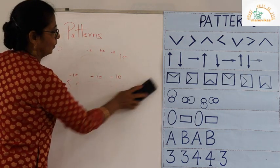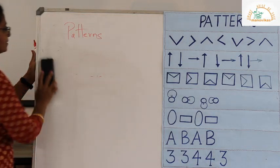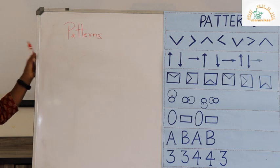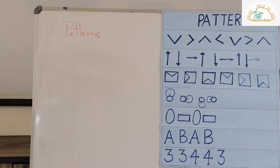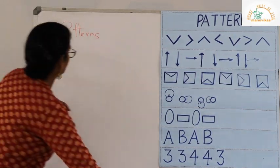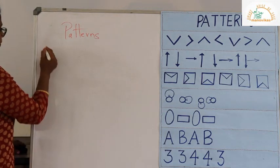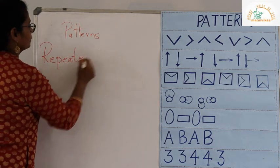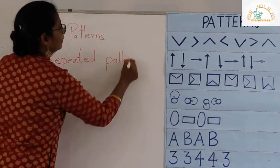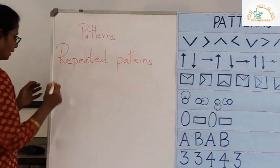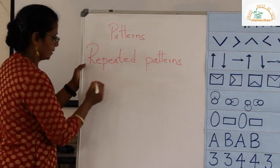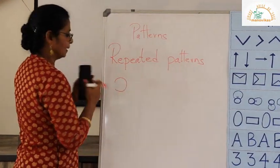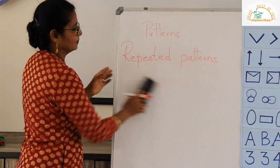Events in nature also grow. There are so many events that take place. They grow because even seasons have a sequence — they come in and go. Now we talk about repeated patterns. Let's take an example with numbers.